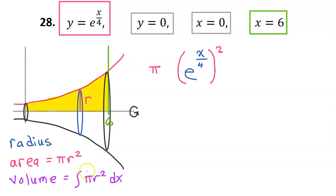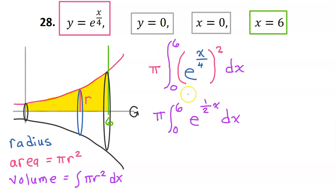Step 3 is to make an expression for volume by integrating the area. We integrate with respect to x because the slices are stacked up from left to right, between 0 and 6. Before we integrate, we can simplify: when you raise a power to a power, you multiply. So x over 4 times 2 gives x over 2, which I write as 1/2 x. For mental u-substitution, let u equal 1/2 x, so u prime is 1/2. Since u prime is a constant, dividing by 1/2 is the same as multiplying by 2, so I'll have a 2 out in front with the pi.